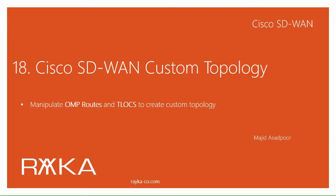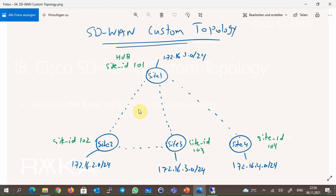Cisco SD-WAN custom topology is what we will implement in this section. The default SD-WAN topology is full mesh, and in the last section we implemented hub-spoke and mesh topology. Custom topology requires us to manipulate OMP routes and Tlock updates. In this topology, the site with site-ID 101 is considered the hub site, and spokes with site-ID 102 to 104 can connect to each other but only through the hub site.